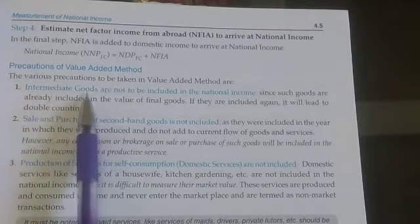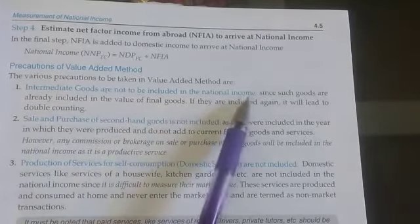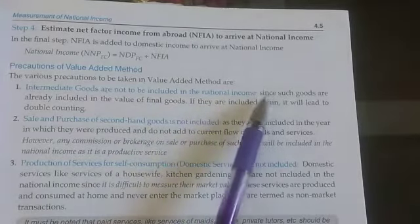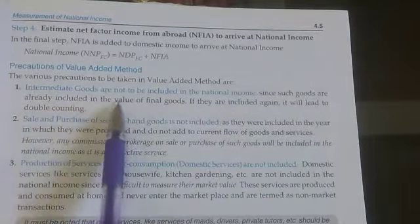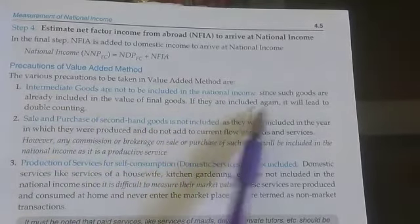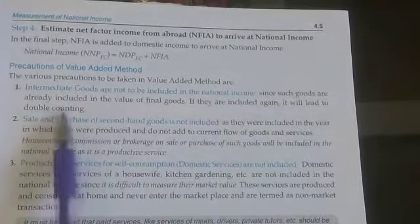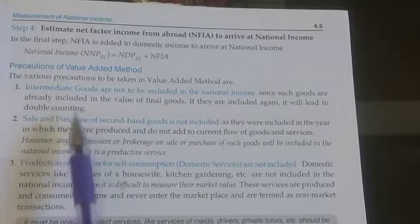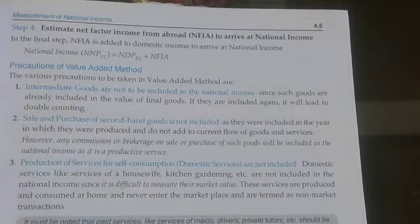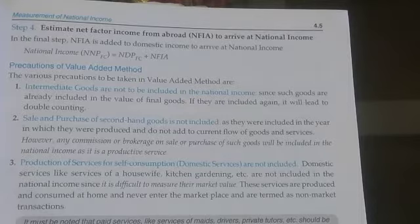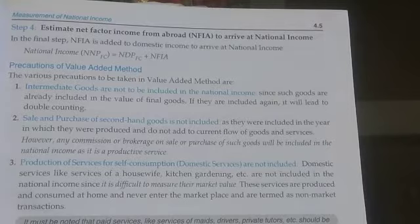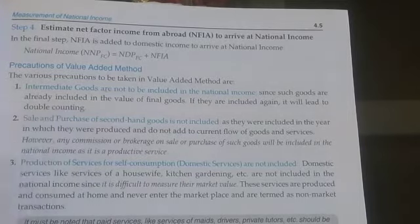The first precaution: intermediate goods are not to be included in the national income. Since such goods are already included in the value of final goods, if they are included again it will lead to the problem of double counting. Only the value of final goods will be included in the national income, not the value of intermediate goods. If we add the value of intermediate goods, we will face the problem of double counting.